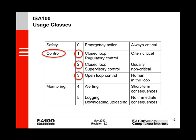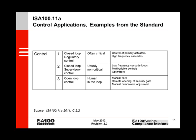Class 1 is closed-loop regulatory controls. Class 2 is closed-loop supervisory controls. And class 3 is open-loop controls. This slide summarizes the control application examples that you can find described in the ISA100.11a standard itself. Let's start with control class 3. The open-loop control examples in the standard all involve the user in the loop. An operator manually initiates a flare and watches the flare. A guard remotely opens the security gate. An operator performs a manual pump or valve adjustment.